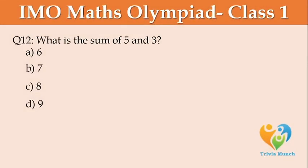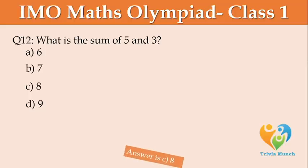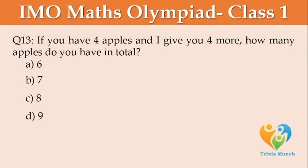What is the sum of 5 and 3? Option A: 6, Option B: 7, Option C: 8, Option D: 9. If you have 4 apples and I give you 4 more, how many apples do you have in total? Option A: 6, Option B: 7, Option C: 8, Option D: 9.